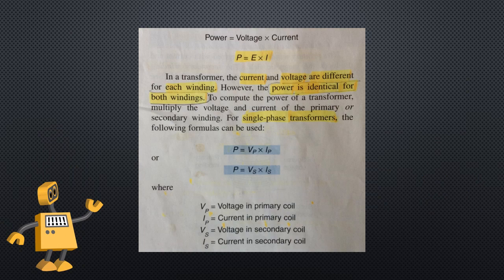Power rating. Transformer power is designated in volt amperes (VA) or more commonly kilovolt amperes (kVA). The formula P = E × I was presented in chapter 1. In a transformer, current and voltage differ for each winding; however, the power is identical for both. To compute power, multiply the voltage and current of the primary or secondary winding. For single-phase transformers: P = EP × IP, or P = ES × IS.